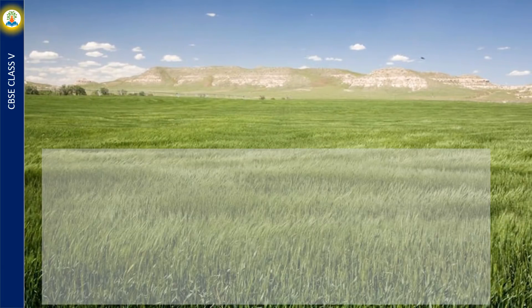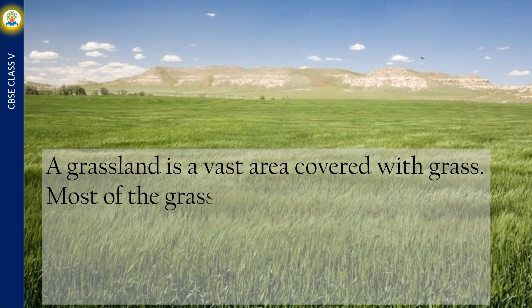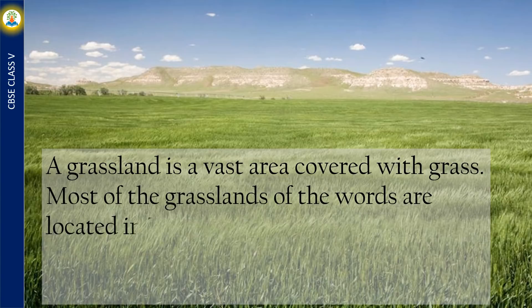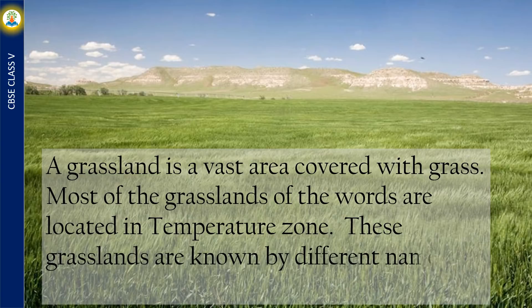A grassland is a vast area covered with grass. Most of the grasslands of the world are located in the temperate zone. These grasslands are known by different names in different continents.